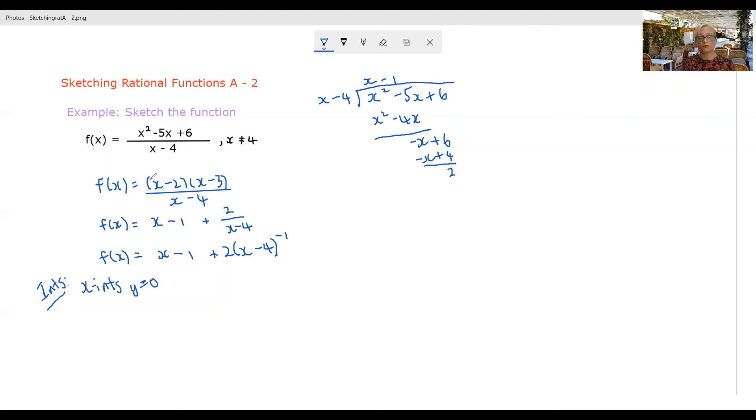Now for a rational function to be zero, the numerator has to be zero. That's why I factorized it. And we said obviously that x is either going to be two or three.